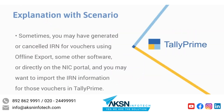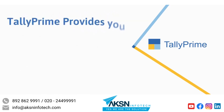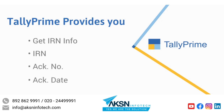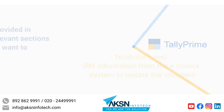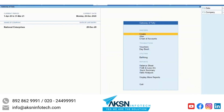Sometimes you may have generated or cancelled IRN for vouchers using offline export, some other software, or directly on the NIC portal, and you may want to import the IRN information for those vouchers in TallyPrime. TallyPrime provides a facility called GetIRNInfo, using which you can import the latest IRN, ACC number, and ACC date along with the QR code from the e-invoice system to the vouchers. This facility is provided in the e-invoice report in relevant sections. Let us see how to use it in different scenarios.